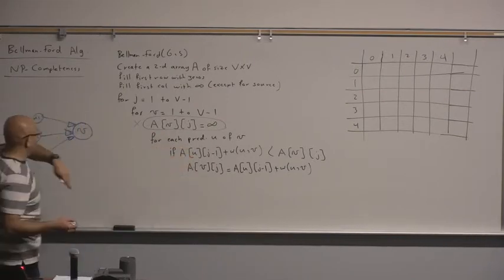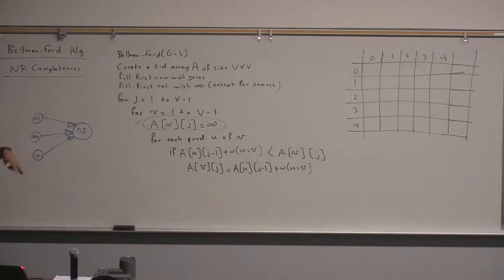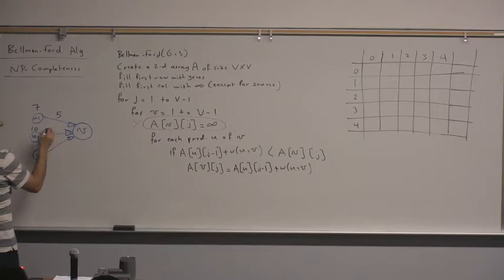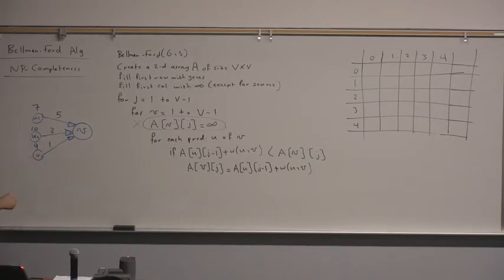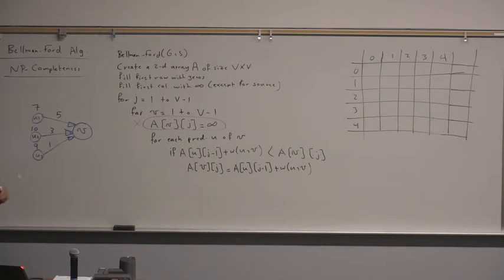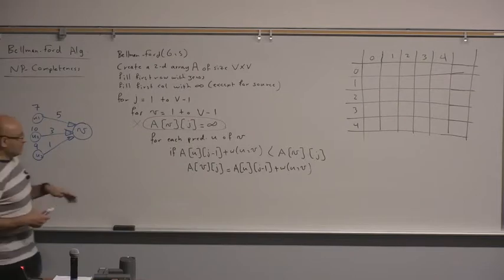This loop searches for the shortest path from source to V. If we have numbers 7 and 5, 10 and 3, and 9 and 1, then the shortest path to this vertex is going to be: 7+5=12, 10+3=13, 9+1=10 — wait, 9+1=10, so actually 10 is the minimum. We go through all the predecessors.